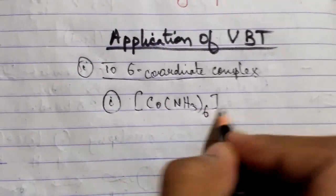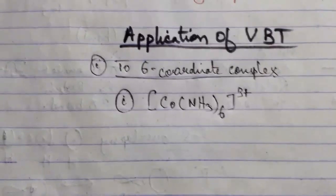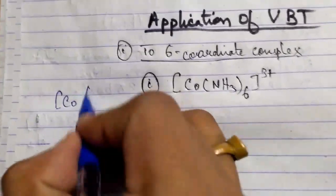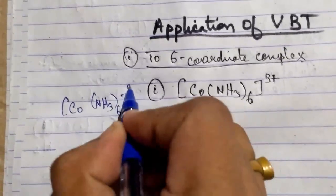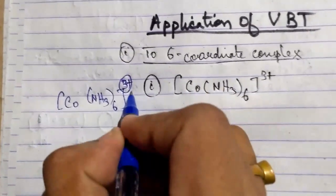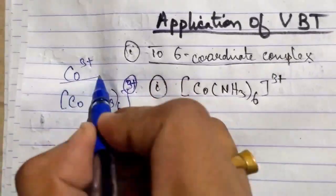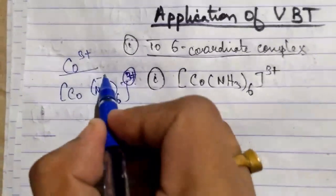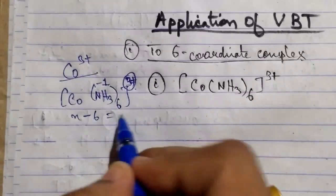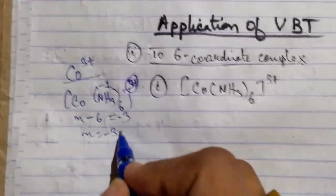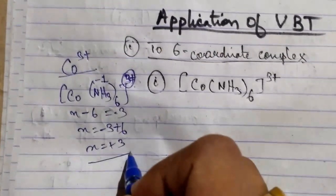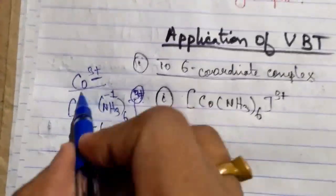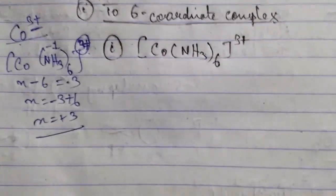Consider Co(NH₃)₆³⁺. The coordination number is 6. For the oxidation state: if it is 3+ overall and NH₃ is neutral, then x = 3+. So cobalt is in the 3+ oxidation state. Cobalt has atomic number 27.